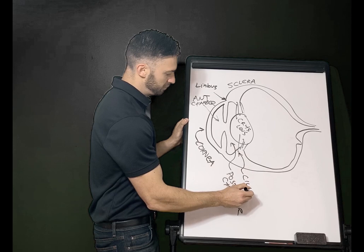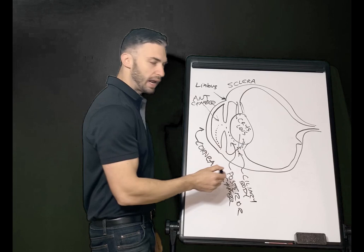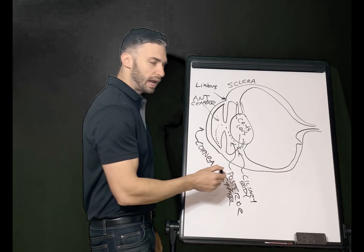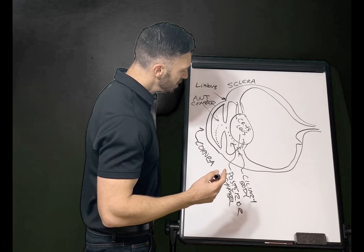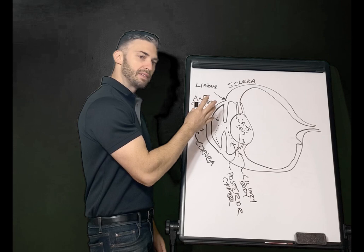Next to it, the ciliary body is actually responsible for producing the aqueous humor, which will flow into the anterior chamber and out through the trabecular meshwork and the canal of Schlemm. It's amazing how it regulates the pressure, so the eye overall maintains the same amount of pressure — the same inflow as outflow.